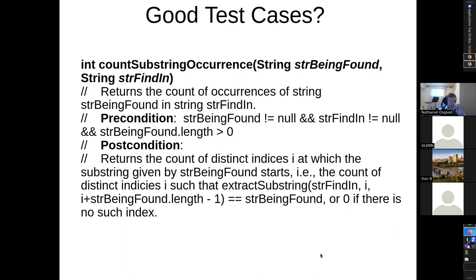Now I want to ask: could we do better? Is that actually a good test case? Do we actually know it should equal zero? What in the specification says it should equal zero? Is there anything in the specification that relates to the post-condition? Could it be the last part of the post-conditions — zero if there is no such index?